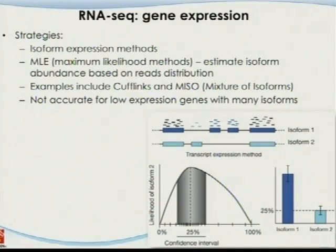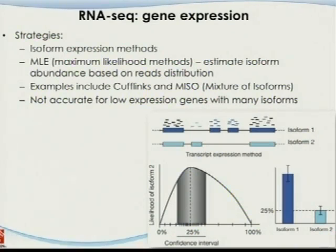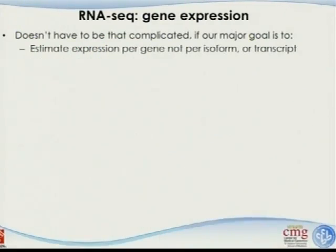So based on this approach, it uses more information — not only from exons uniquely assigned to each isoform, but also takes advantage of the other shared exons at the same time, which increases statistical power. However, this type of approach is not accurate for low-expression genes with many different isoforms.